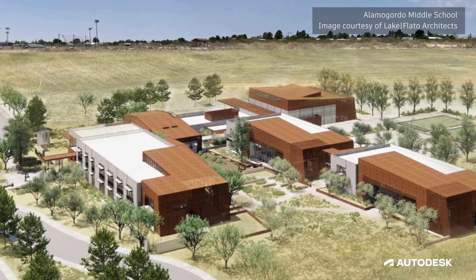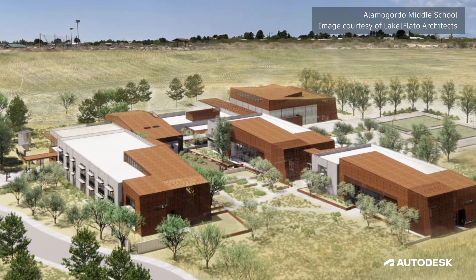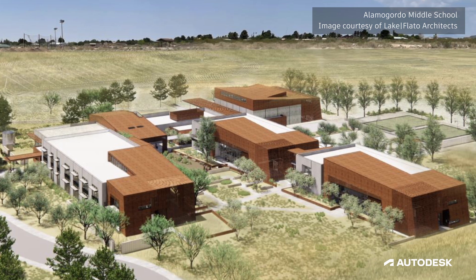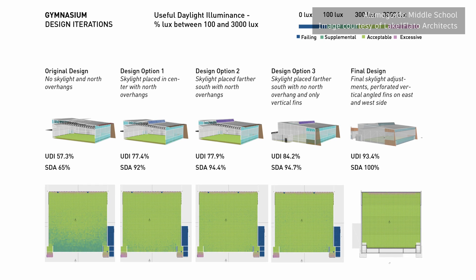Climate Studio actually wrote a blog post about a middle school we're designing in New Mexico. The point was that we used their tool for daylighting, and our design performance team at Lake Plato worked with the design team so early in the project that you could see the design actually changing in the iterations. We had a gymnasium that we got to 100% spatial daylight autonomy — we added a perforated panel over part of the exterior windows, added a skylight, and moved the skylight around.